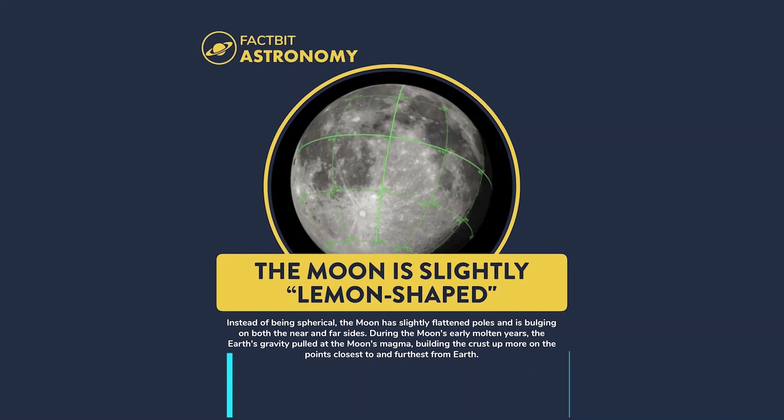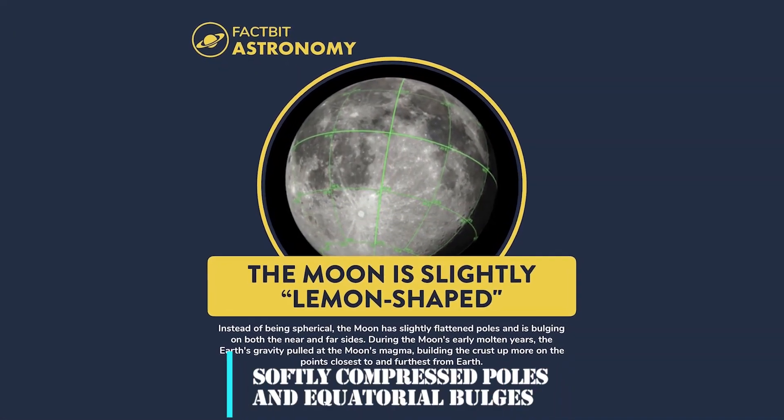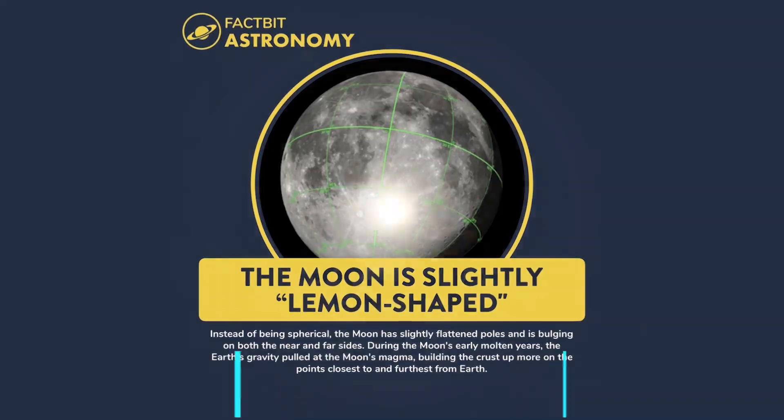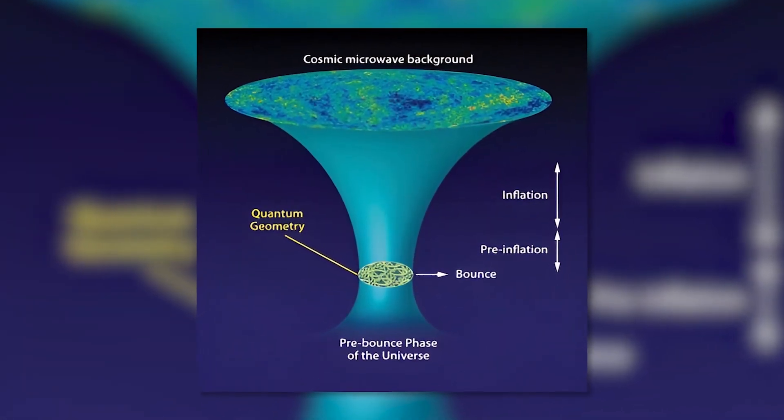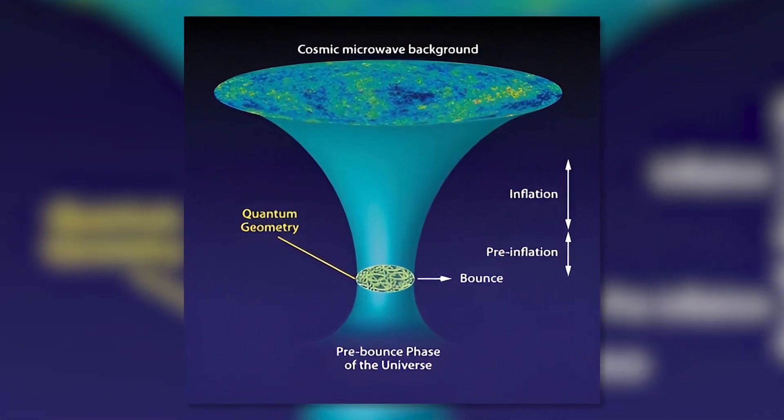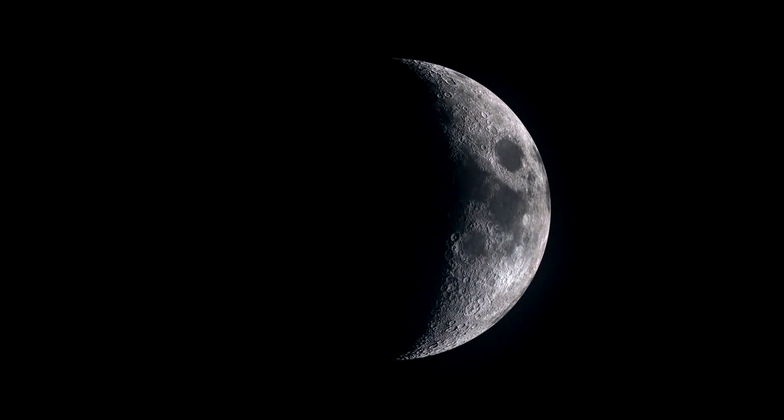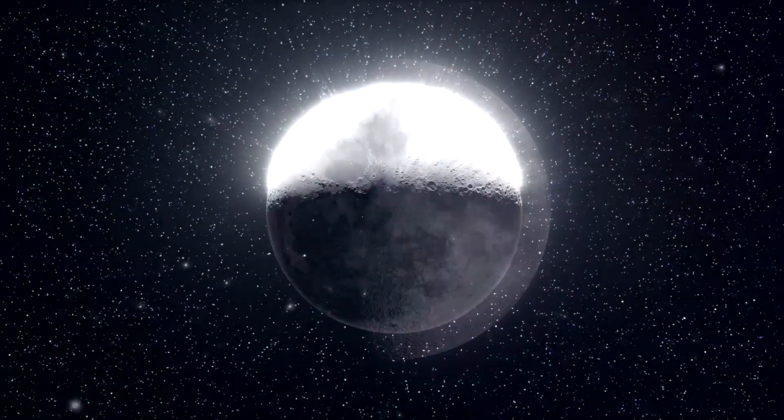The shape is intriguing with its softly compressed poles and equatorial bulges. A cosmic tango with Earth led to the creation of this strange cosmic phenomenon. This unique form was shaped by interactions with Earth during its early years, adding an intriguing twist to our lunar neighbor's appearance.